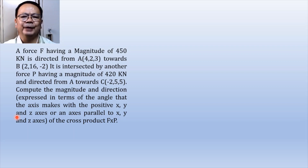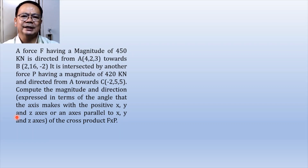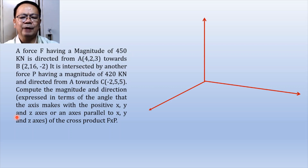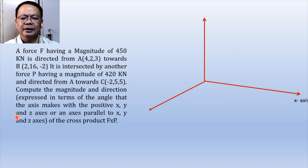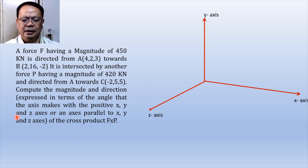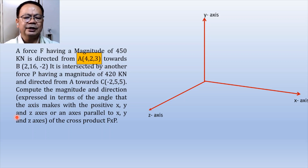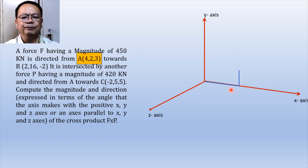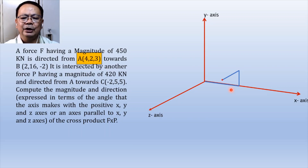In order for us to be able to solve the problem, it will help us if we can show an illustration of how the forces are directed. Let us imagine that we have our three mutually perpendicular axes where this is the direction of the positive x axis, this is the direction of the positive y axis, and this is the direction of the positive z axis. Point A, which is at (4, 2, 3), can be located in space by running 4 units towards the positive x axis, 2 towards the positive y axis, and 3 towards the positive z axis.